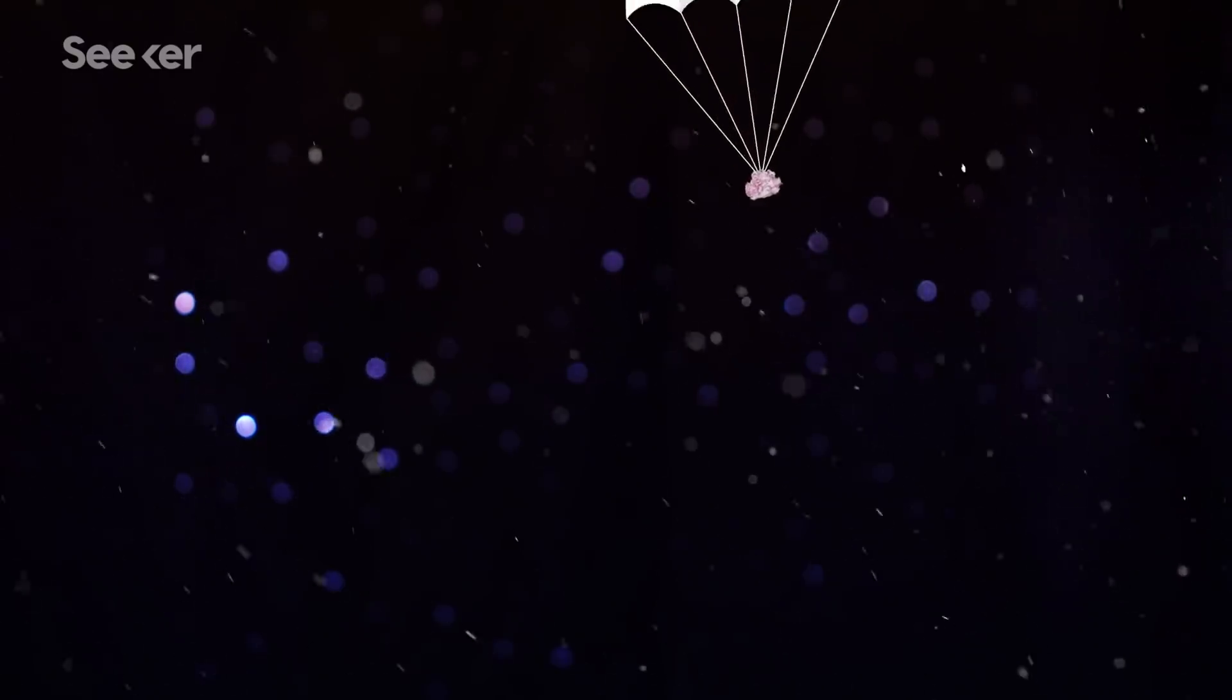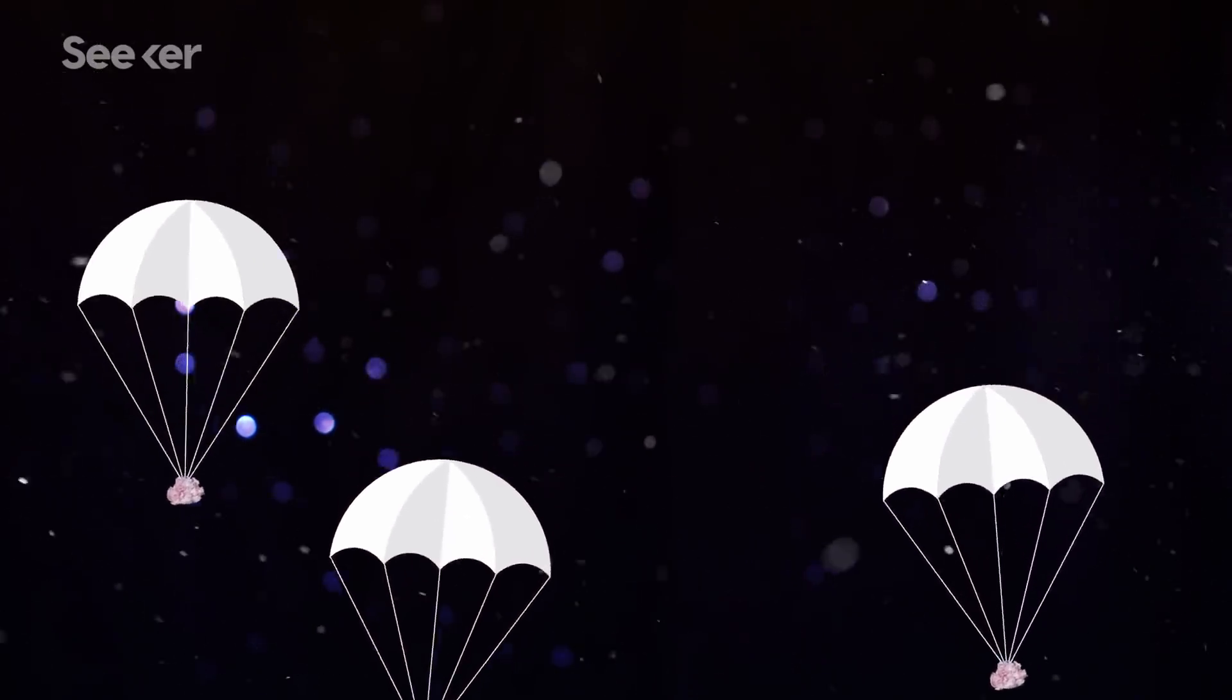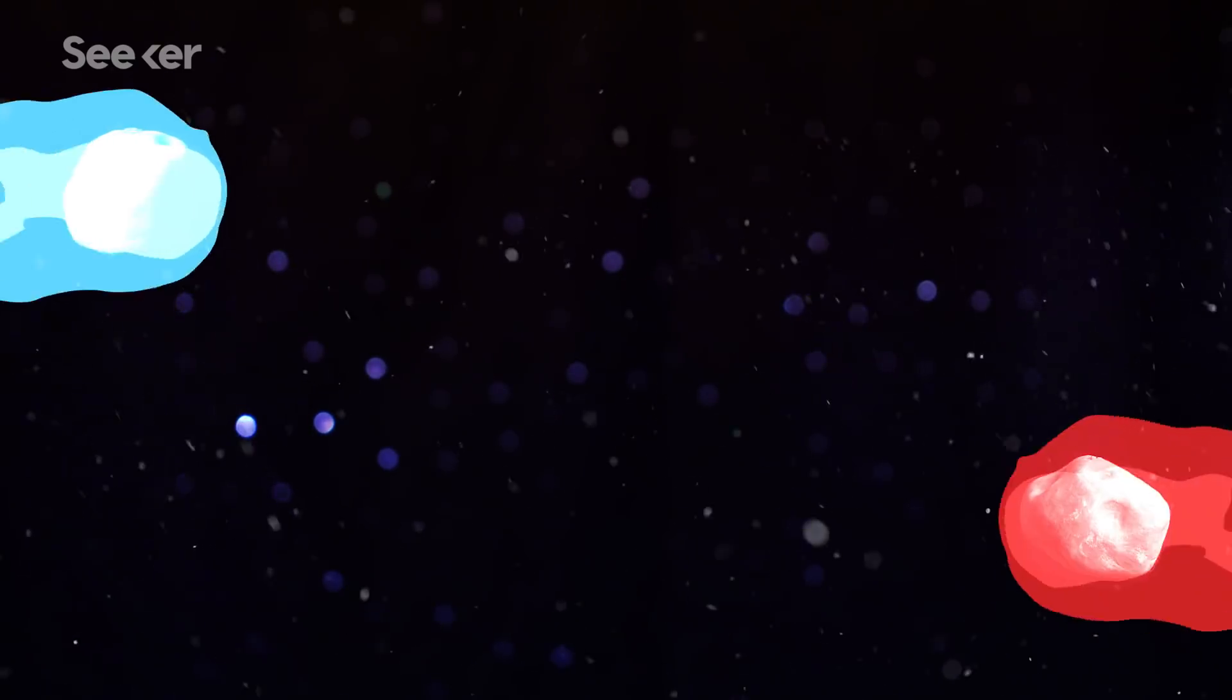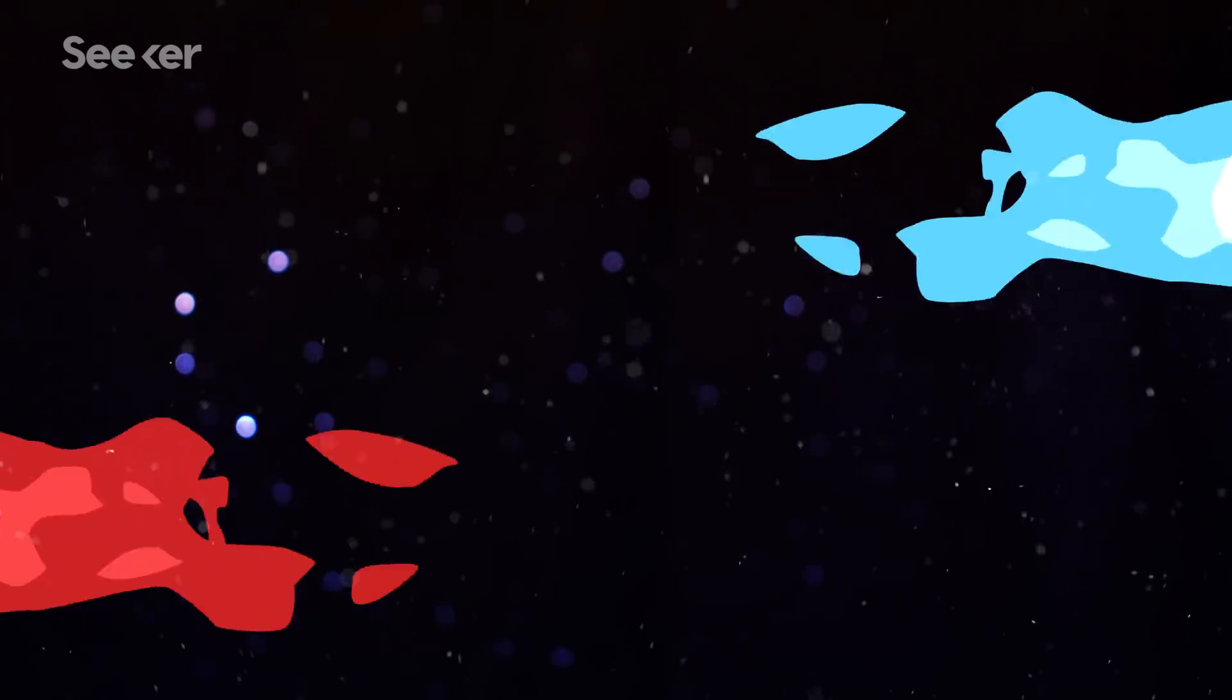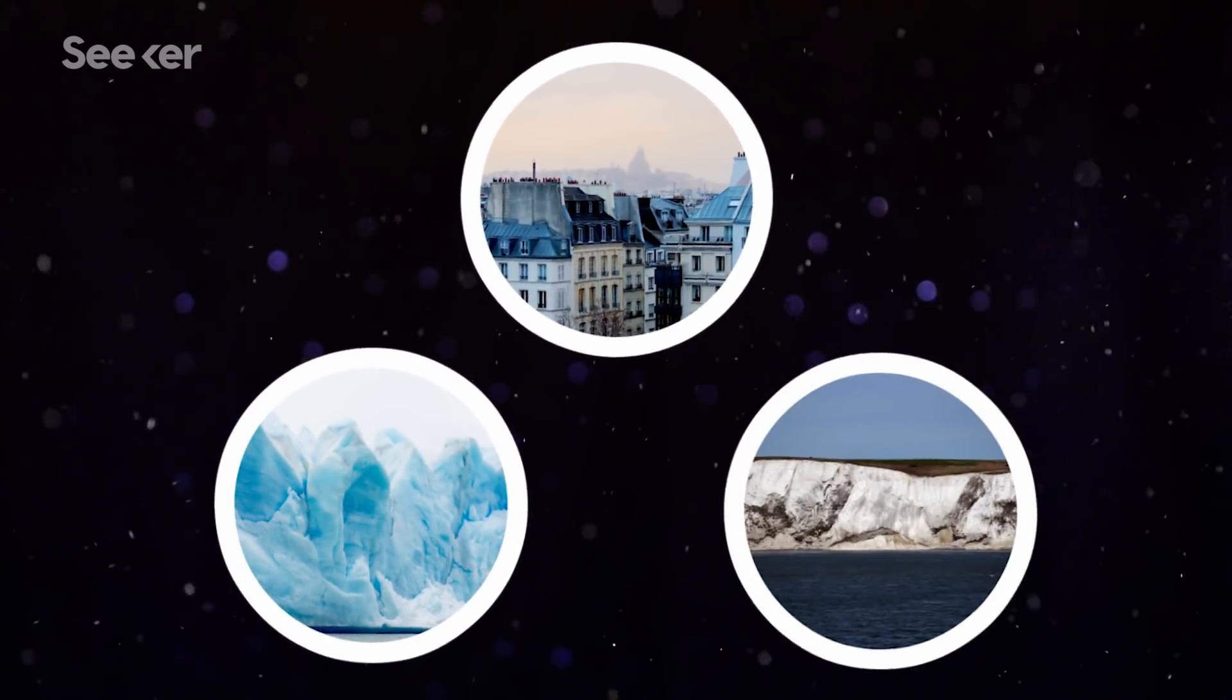But to enter the Earth's atmosphere, the little dusties use bubbles as parachutes, preventing them from burning up upon entry. We can find bits of cosmic dust everywhere. On city rooftops, in Antarctica, and on the cliffs of Dover.